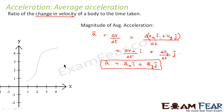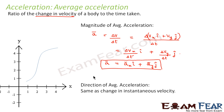Now when it comes to the direction of average acceleration, the direction of average acceleration is the same as the change in instantaneous velocity. Let us look at this graph.